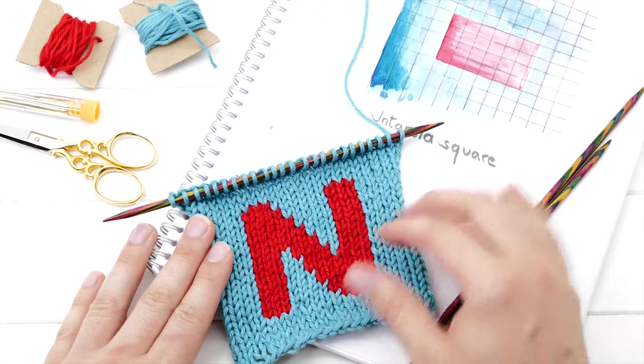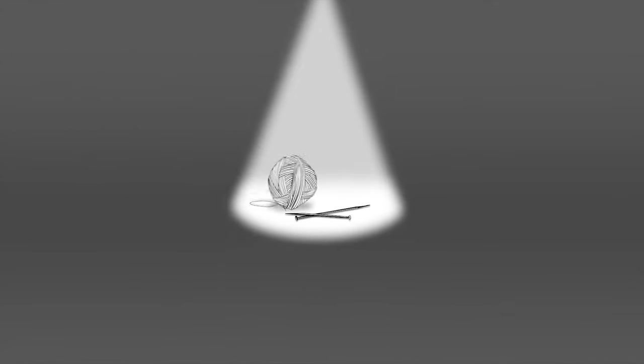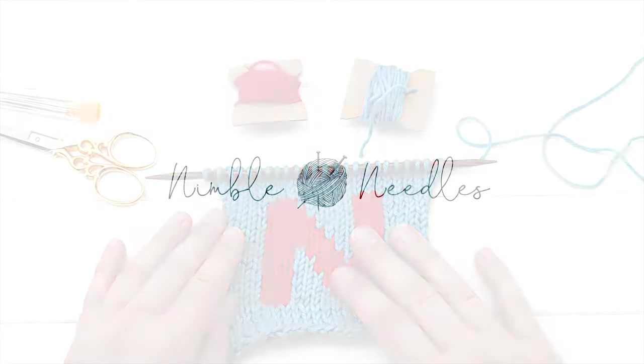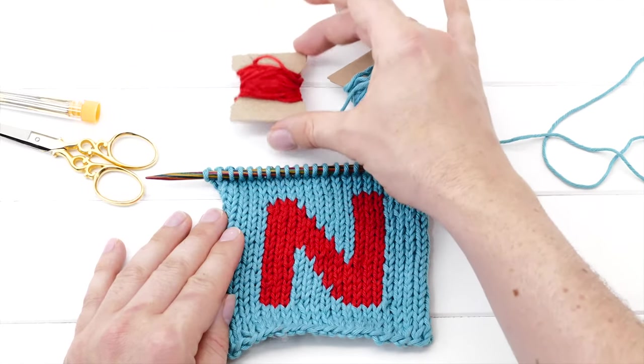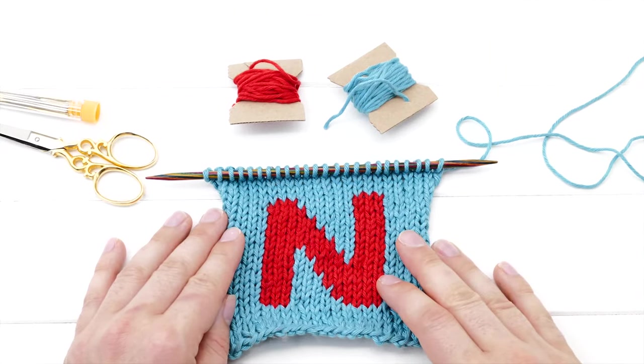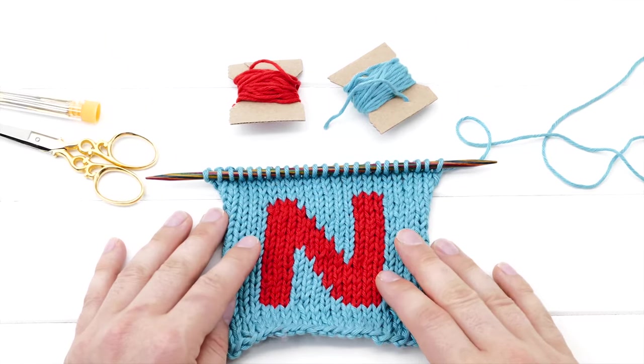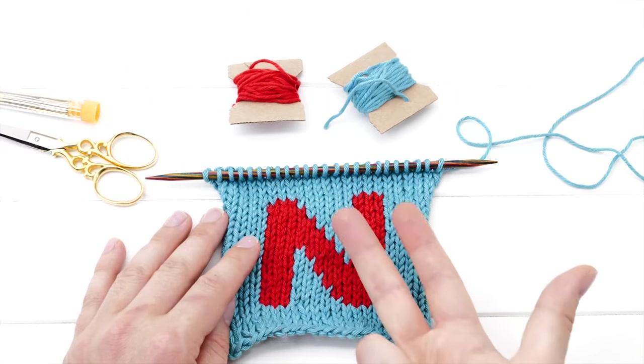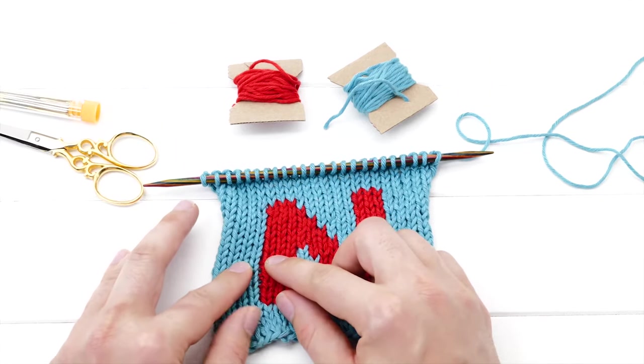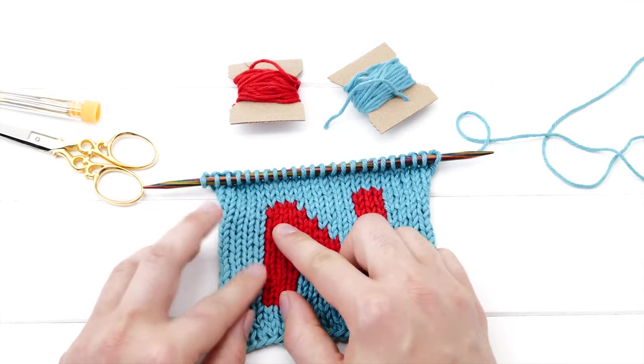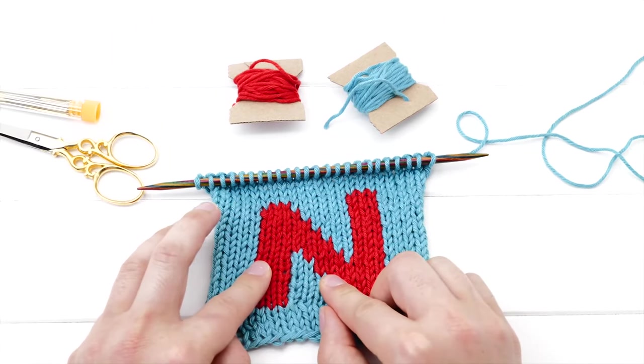So, let's dive right into it! The idea behind intarsia is working with many separate yarns or bobbins at the same time using a special joining method. By twisting the yarn as you change color, you can knit blocks or panels in different colors without creating any visible gaps.